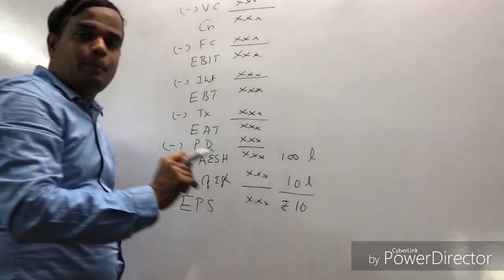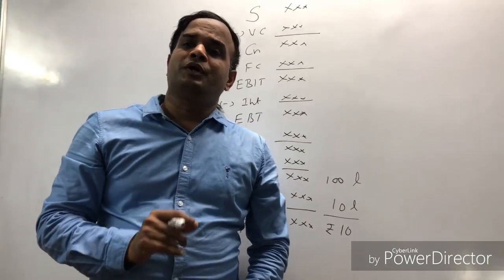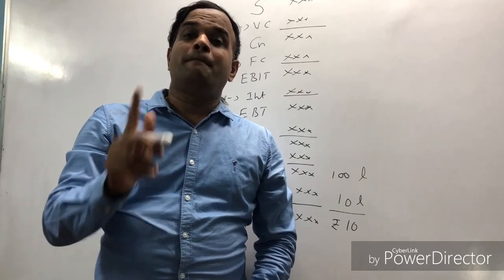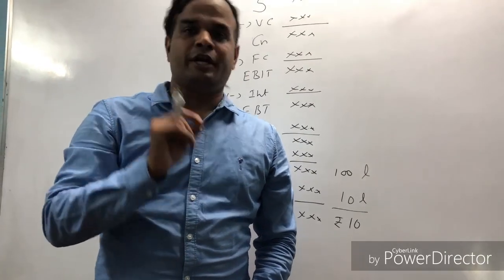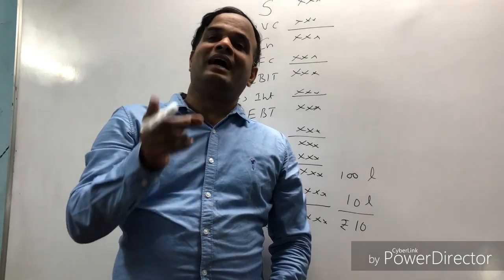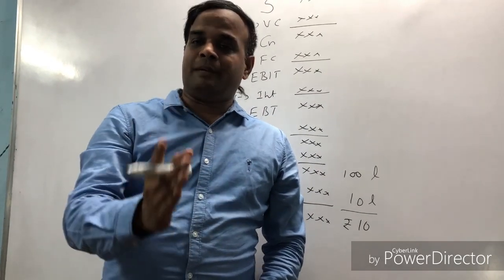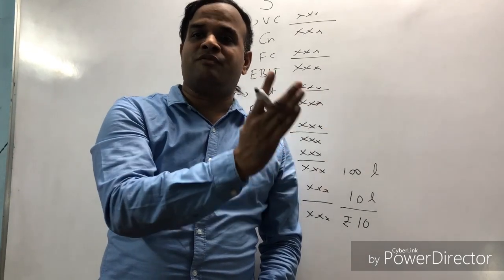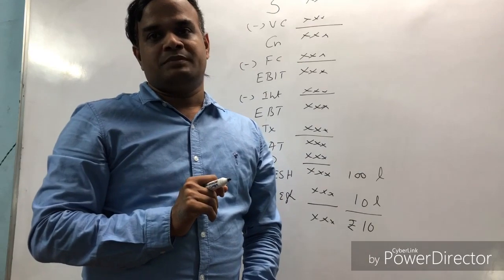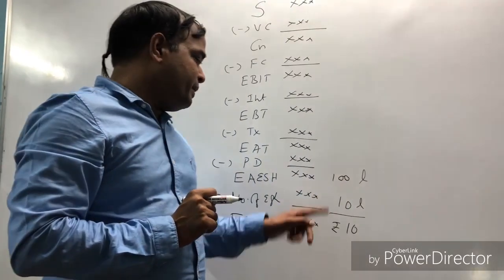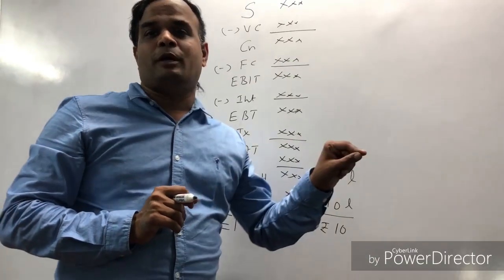The EPS comes to 10 rupees. Earning per share means if you are holding shares, you are entitled to get 10 rupees per share. Suppose you have 100 shares, you get 100 × 10 = 1,000 rupees. Another person having 5,000 shares gets 5,000 × 10. That is called earning per share. The company is having 100 lakhs profit.